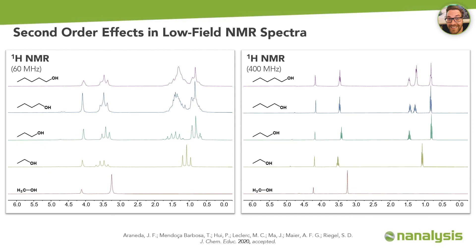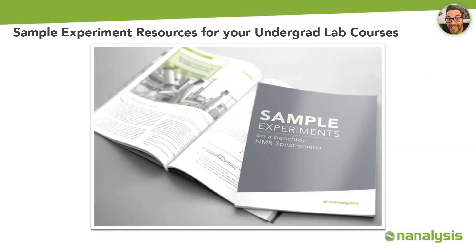As an example, I would like to present a comparison of a series of alcohols at 60 MHz on the left and 400 MHz on the right. The stacked spectra of methanol, ethanol, propanol, butanol, and pentanol illustrate the differences between first- and second-order spectra. While the molecules only differ by additional methylene fragments, the coupling between all these groups and small chemical shift differences lead to significant overlap in the region between 0 and 2 ppm. There are many more sample experiments accessible on our website — please feel free to utilize these as a resource for your undergrad lab course.